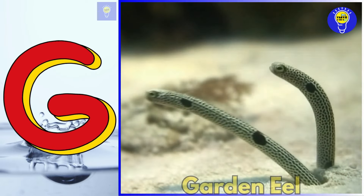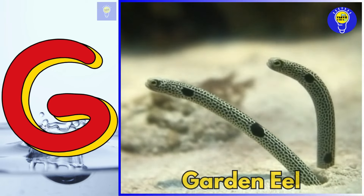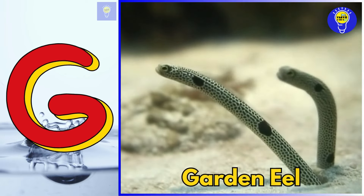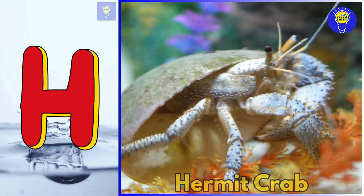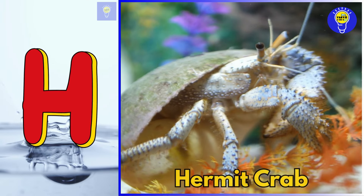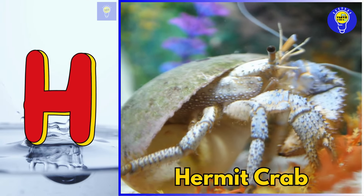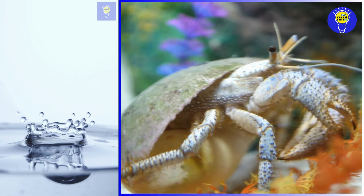G is for garden eel. G, G, garden eel. H is for hermit crab. H, H, hermit crab.